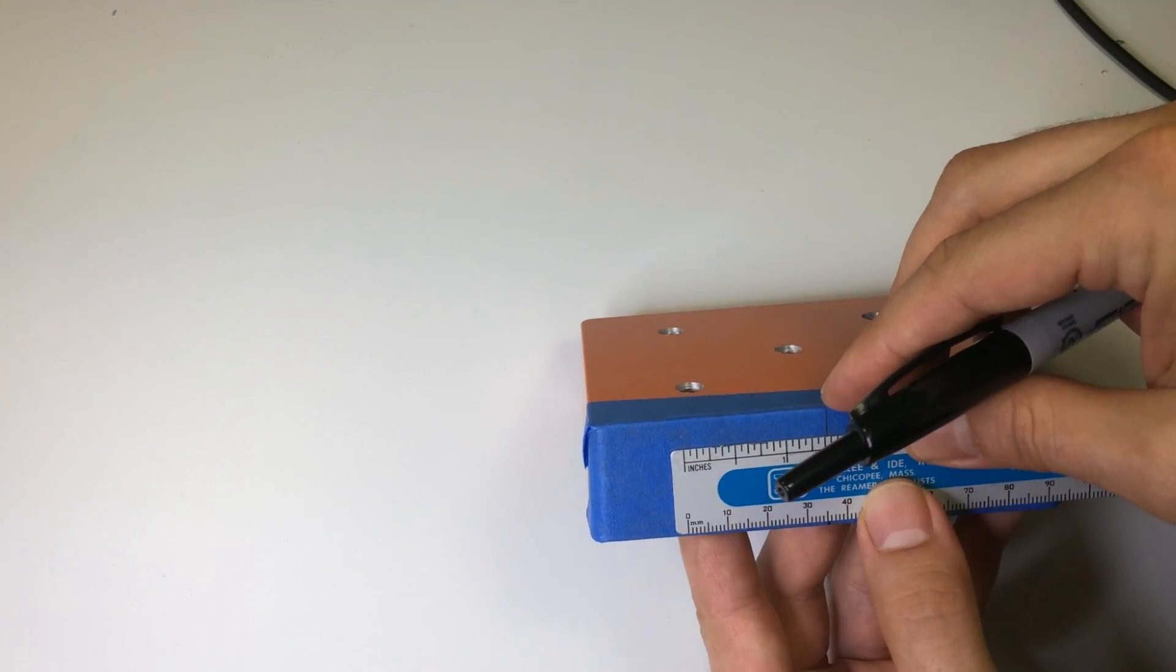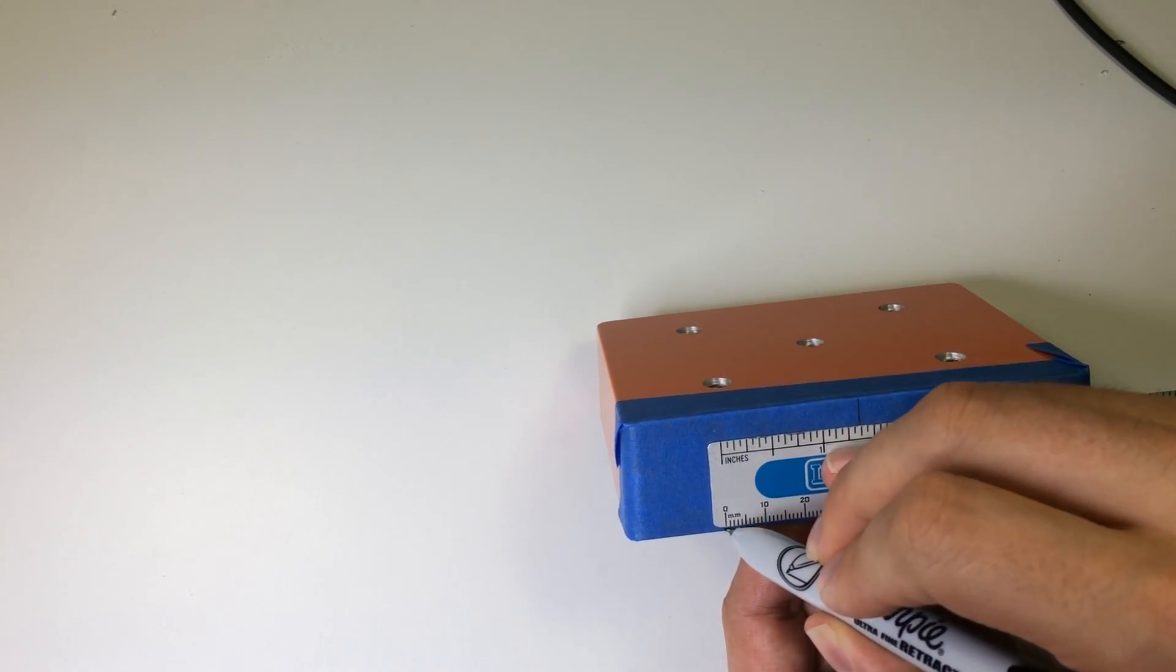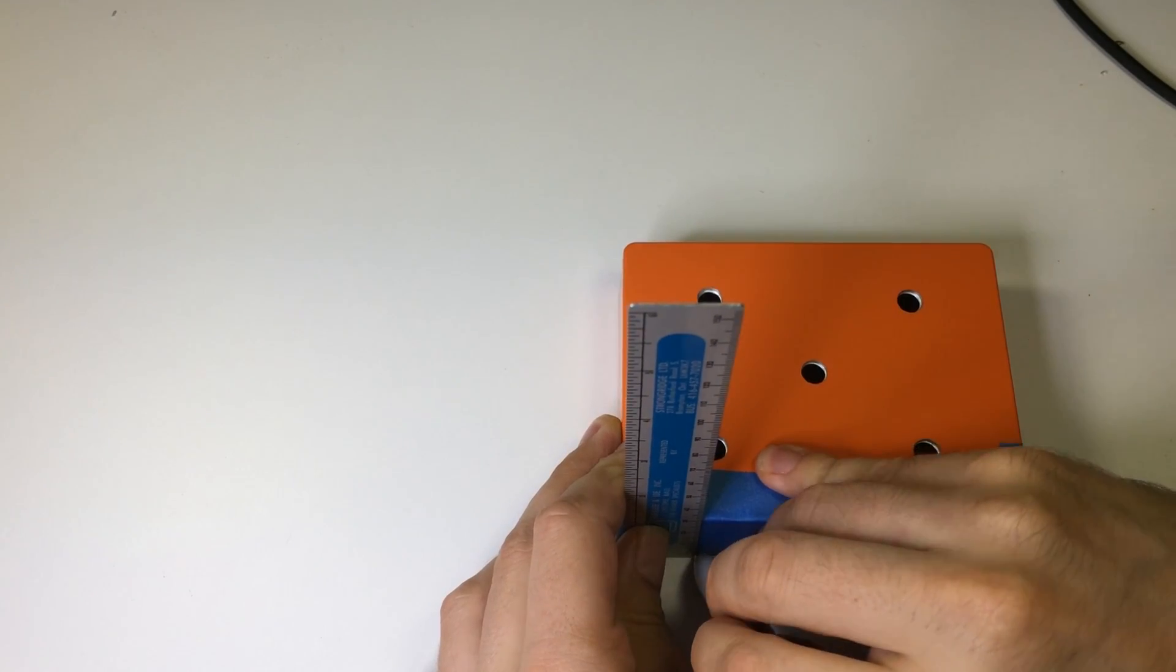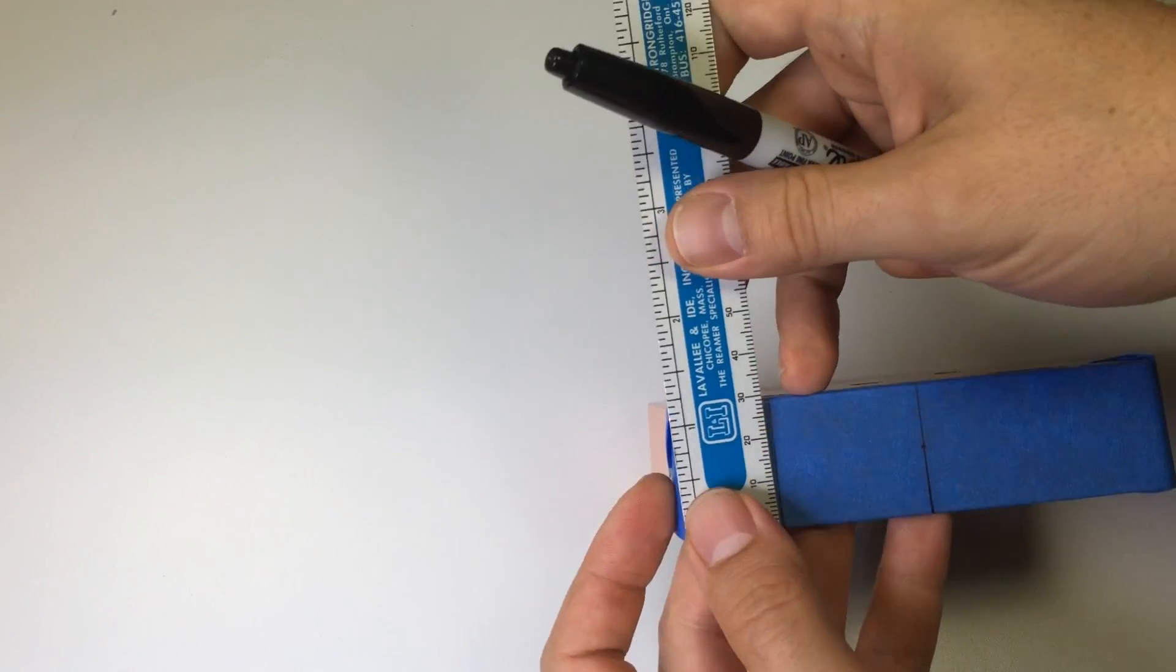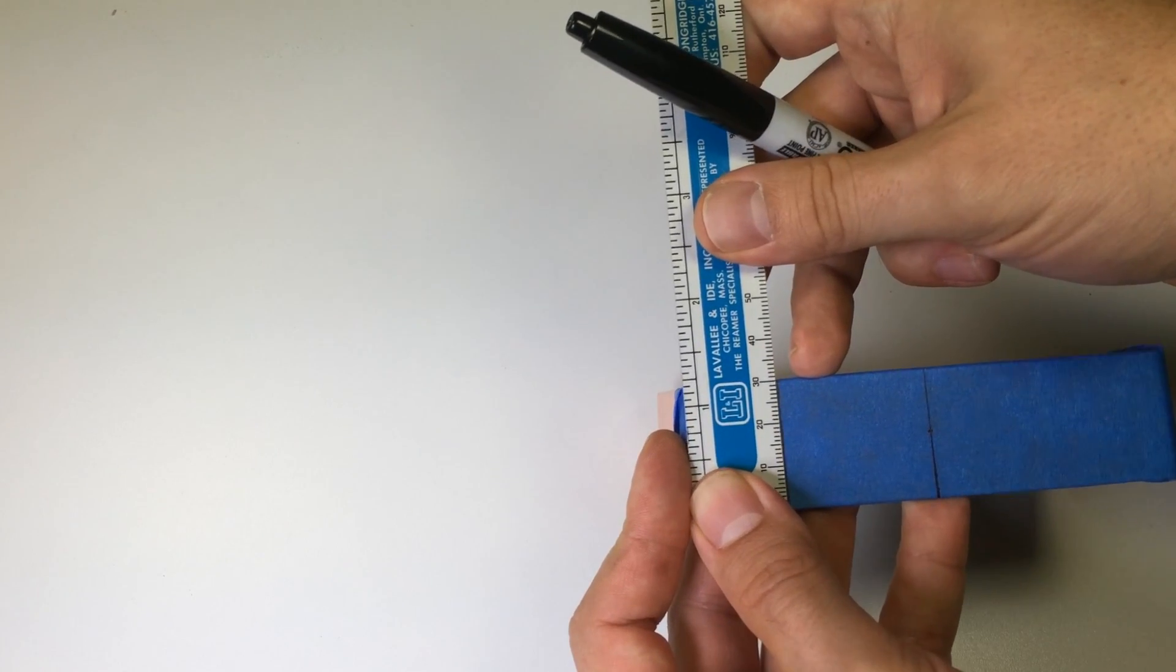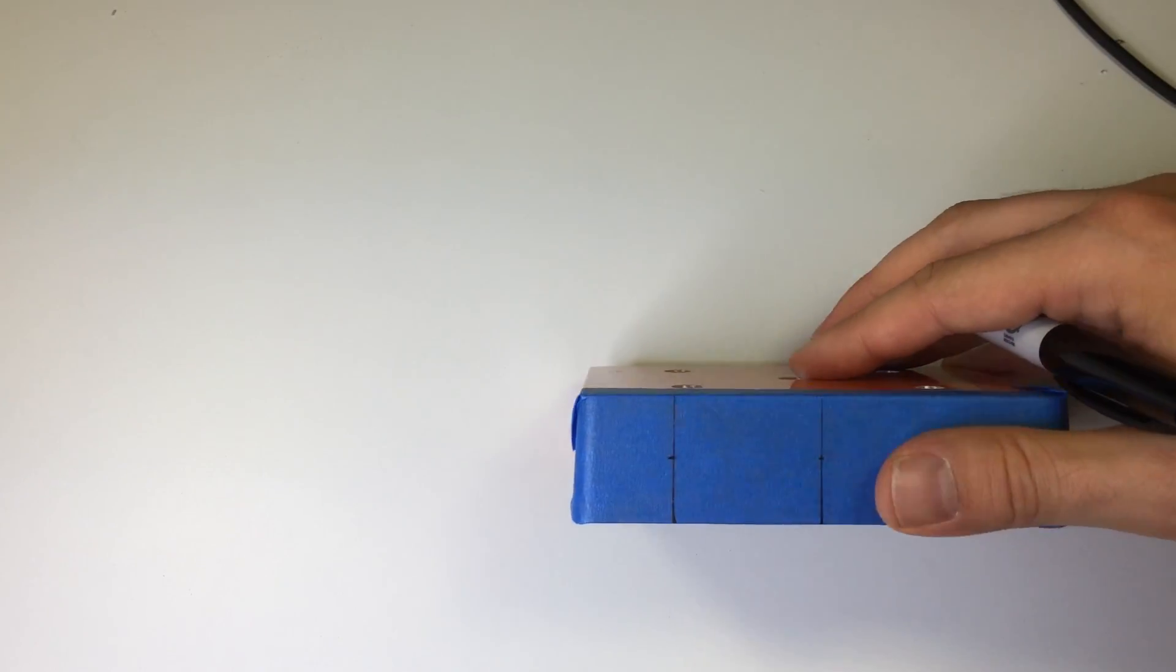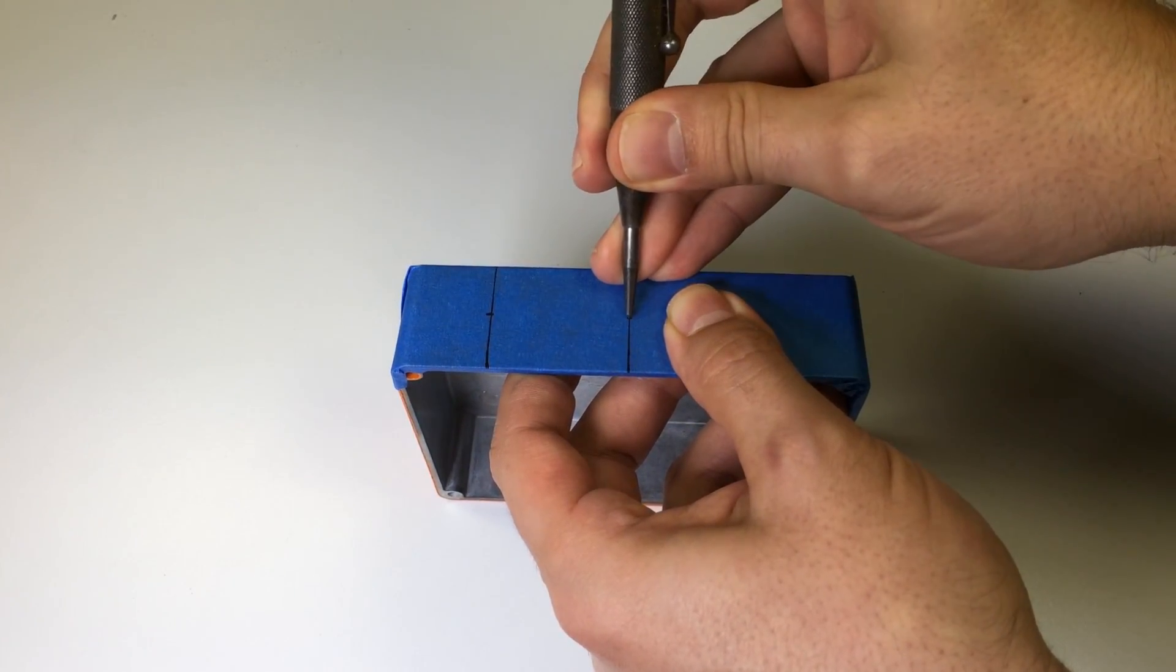Now, we'll mark the power jack location. Measure 1 3/8 inches or 35 millimeters from the center line. Draw a mark at this location. Once again, measure the height and divide that in half. Now, use your center punch to make a mark.